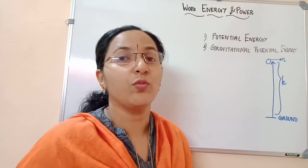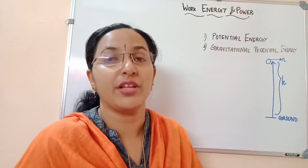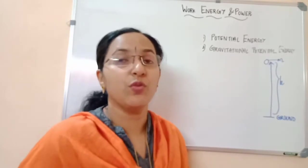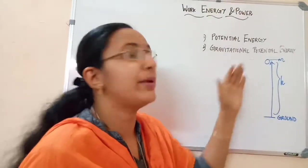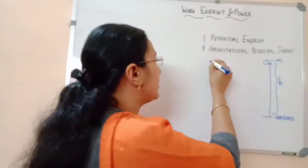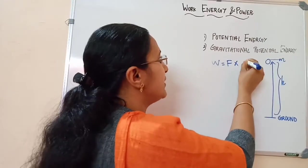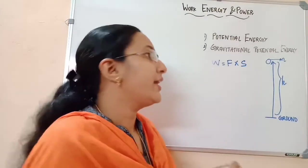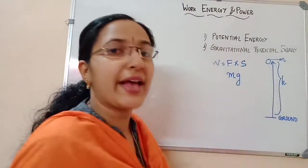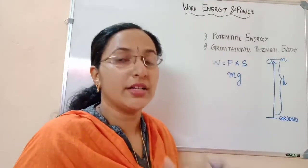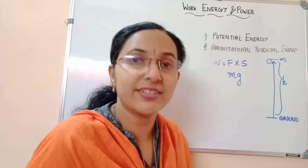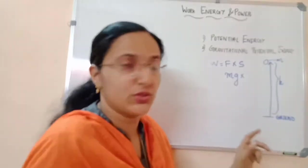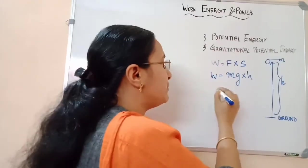Here the potential energy is work gained against gravitation — we are doing work against the gravitational force. When we say potential energy in terms of work, it is the work done to raise an object from the ground to a particular height. You know the equation for work: work done is equal to force into displacement. The force required to raise an object from the ground is mg — that is mass into acceleration due to gravity — and the displacement is h, the height. Therefore W = mgh.